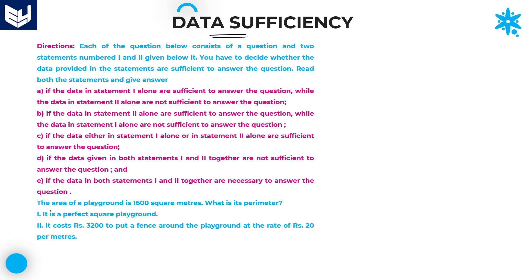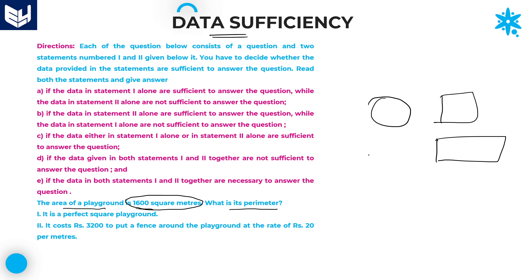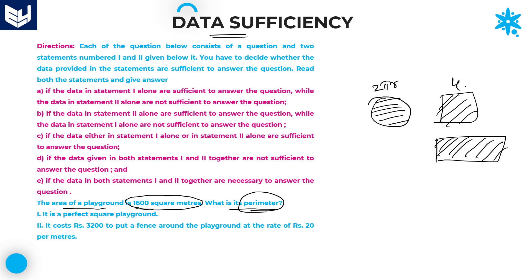The question is: the area of a playground is given as 1600 square meters — what is its perimeter? We don't know the shape of the playground, whether it is a circle, a square, or a rectangle. Even though the area is given, unless we know the shape, it is not possible to get the perimeter, because for each shape the perimeter formula is different: for a circle it is 2πr, for a square it is 4×side, and for a rectangle it is 2×(l+b).